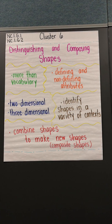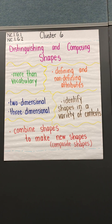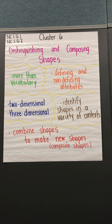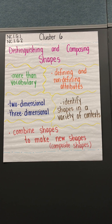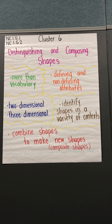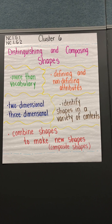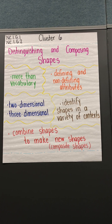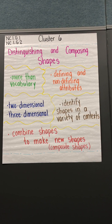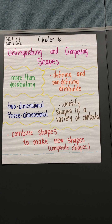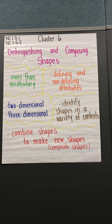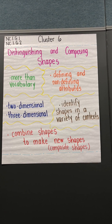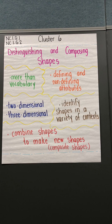The standards in NC1G1 involve distinguishing between defining and non-defining attributes and creating shapes with defining attributes by building and drawing triangles, rectangles, squares, trapezoids, hexagons, and circles.